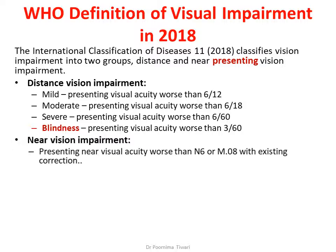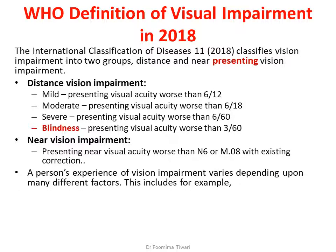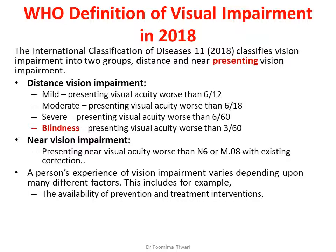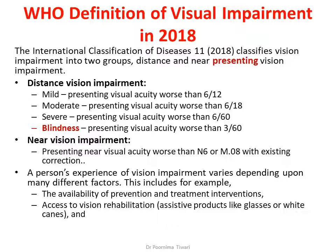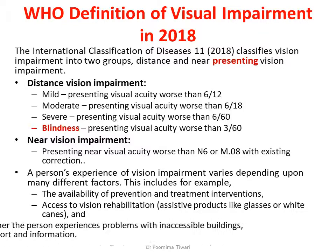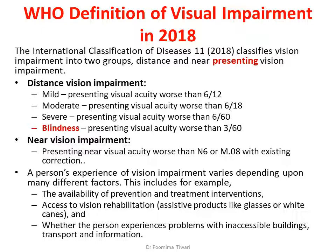Near vision impairment was defined as presenting near visual acuity worse than N6 or M0.8 with existing correction. It was also noted that a person's experience with vision impairment varies depending on the facilities available in the country where they live — for example, availability of prevention of further complications, treatment interventions, access to rehabilitation like glasses, white canes, or surgery, and whether the social system has been modified to meet the needs of low vision people.